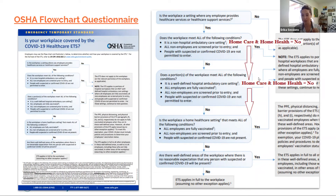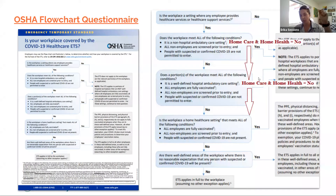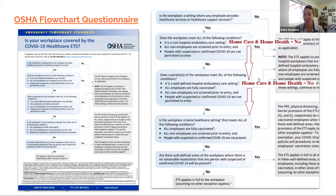There is a footnote in the ETS — and I've spent a lot of time reading this document — which states that home health care and home care are not considered non-hospital ambulatory care settings. So answering no to that question automatically moves us down to the next section of the flowchart, which again asks if you are a well-defined hospital ambulatory care setting. We can say no to that as well, which bumps us into the next bubble — and if we go to the next slide, we've zoomed in on the bubbles that apply to home care.